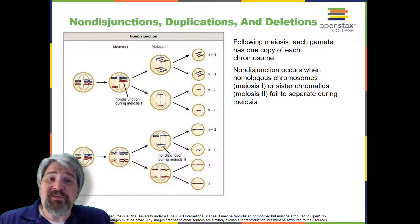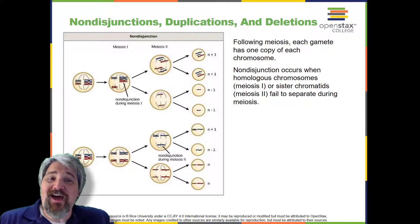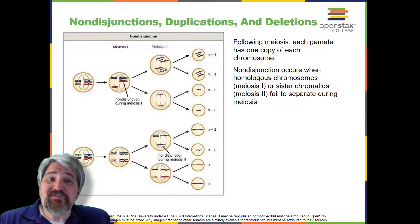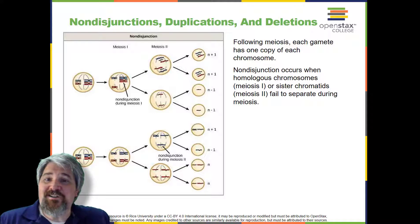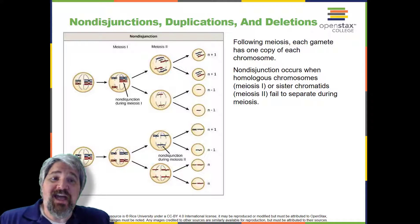Most autosomal trisomies also fail to develop to birth. However, duplications of some of the smaller chromosomes — 13, 15, 18, 21, or 22 — can result in offspring that survive for several weeks to many years. Trisomic individuals suffer from a different type of genetic imbalance: an excess in gene dose. Cell functions are calibrated to the amount of gene product produced by 2 copies of each gene; adding a third copy disrupts this balance.